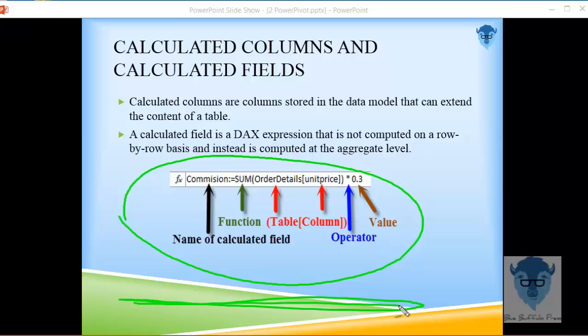If you look at the formula that I drew up in here, I have the name of the calculated field commission. Then I have a colon equals and I call a function sum. Then I have the name of the table, which in this case is order details. And then the name of the column that I want to use, unit price.